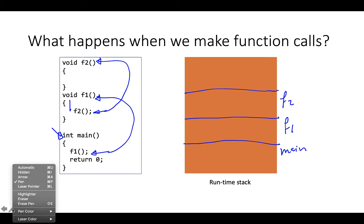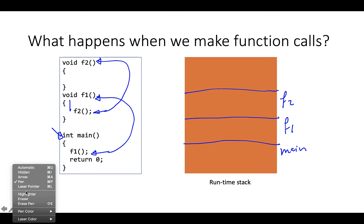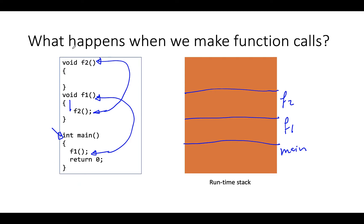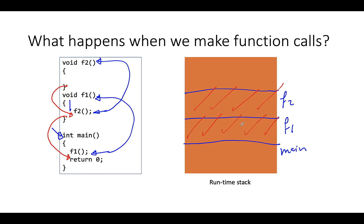Execution continues until we hit the next function call. As soon as we hit this function call, control jumps to function F2, and a stack frame for F2 is created. Now function F2 executes, and as soon as function F2 returns, control jumps back to the statement that follows this function call, and the stack frame for function F2 is removed. Same thing happens for F1 — as soon as F1 returns, control jumps back and the stack frame for F1 is removed.